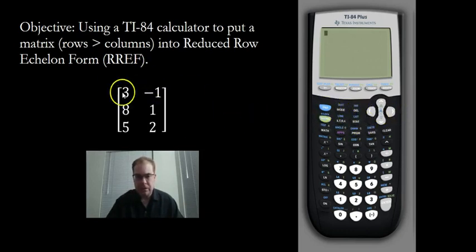Alright, so I'm going to store this matrix into the calculator. We go to second matrix here, select one of the variables, so I'm going to use variable A, and this is a 3 by 2. So I'm going to put in 3, minus 1, 8, 1, 5, and 2.